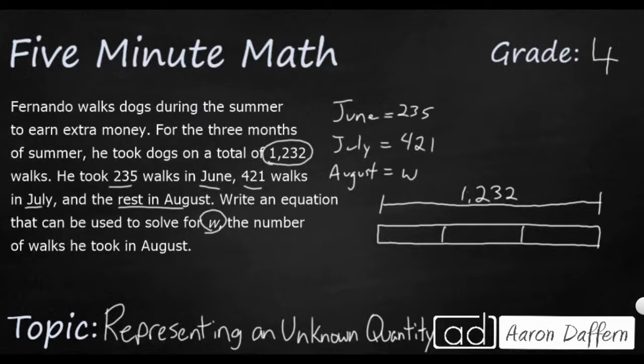So we'll just pretend they're equal. So we have 235. That's going to be in June. 421. That's going to be in July. And then this W is going to be August. That's going to be my unknown.